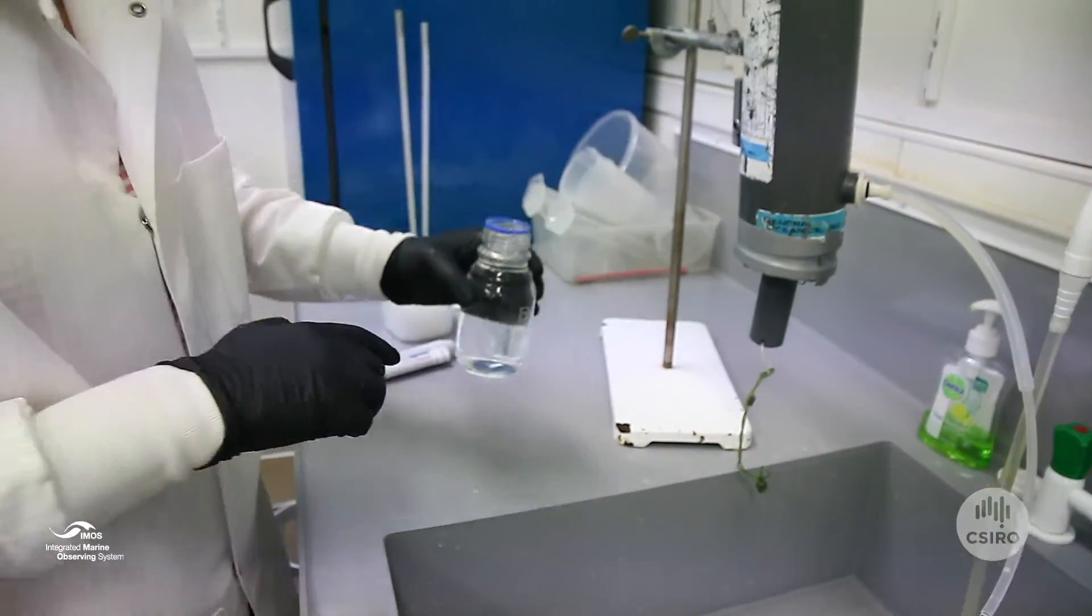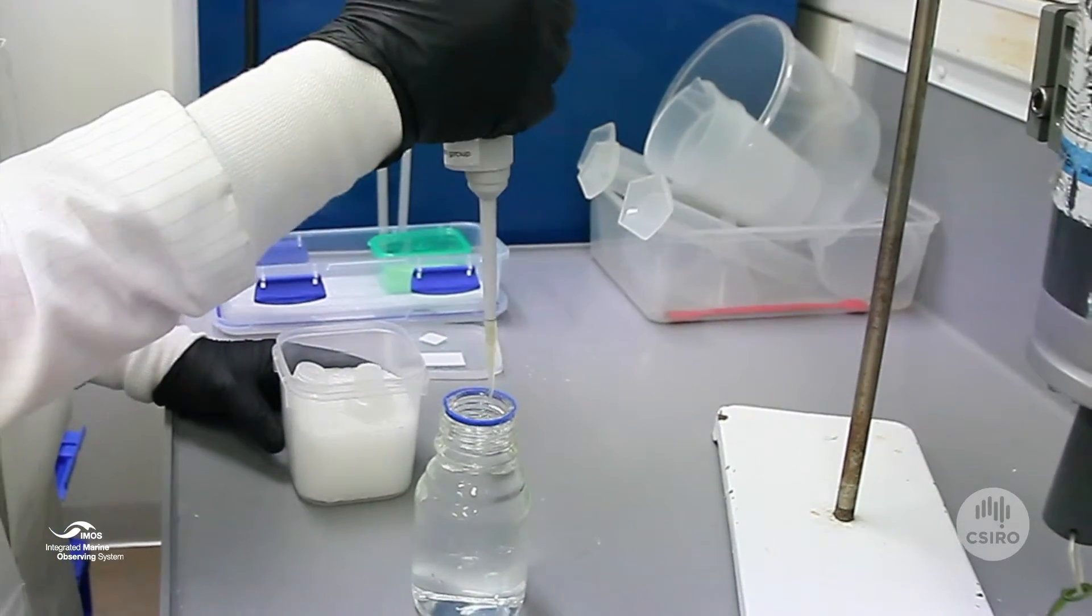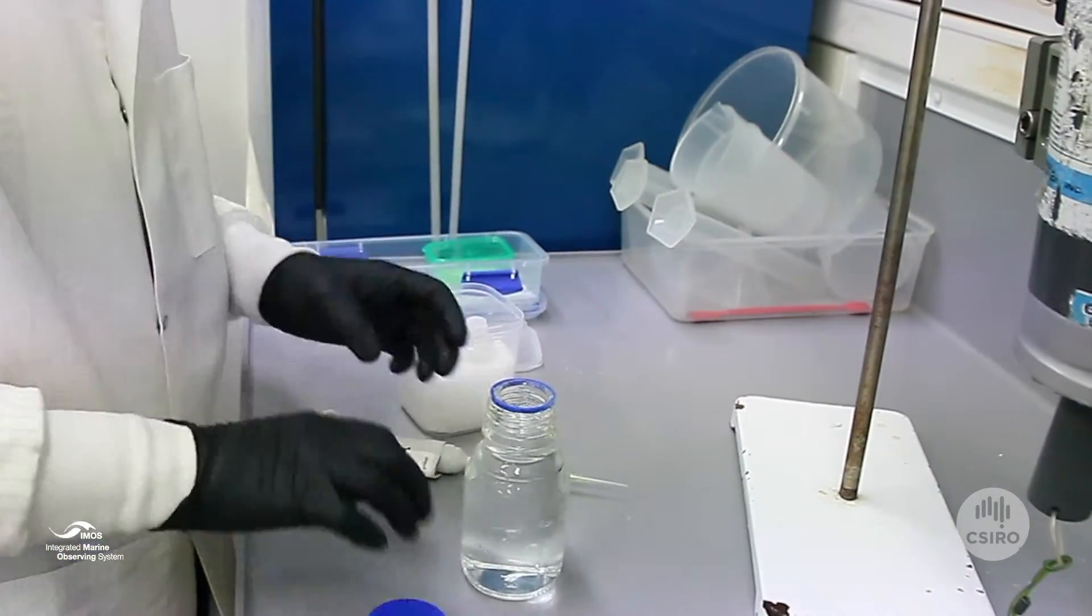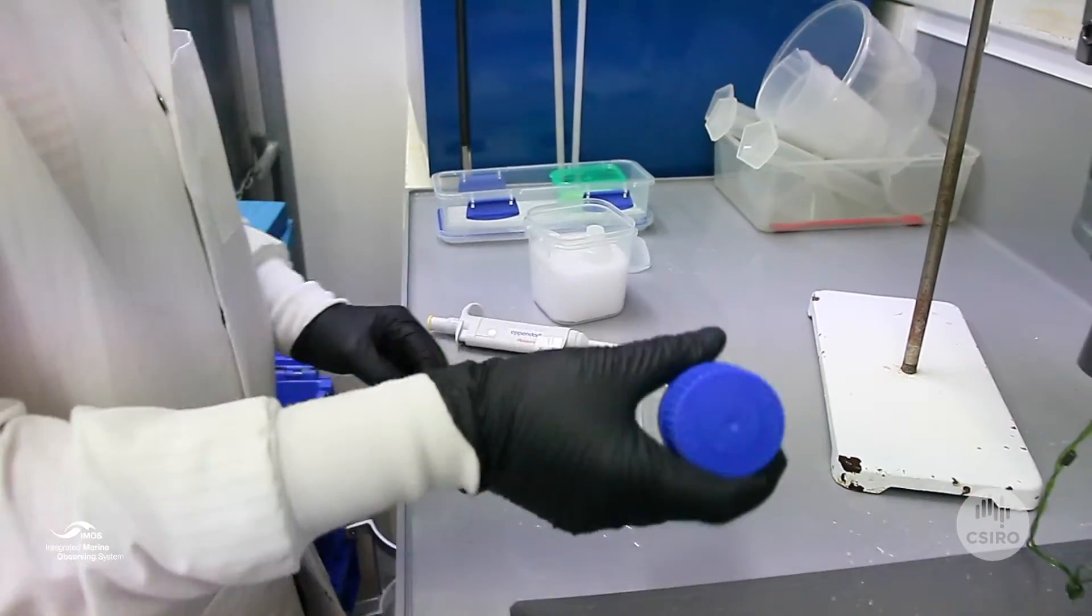Poison the sample with one squirt. Put on the lid and invert twice. Put it back in the box.